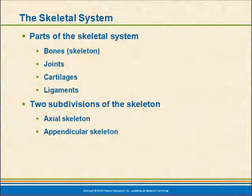That's actually part of the appendicular skeleton. The appendicular skeleton is associated with movement. That includes the arms, the girdles that hold the arms in place like the clavicle and scapula, and the bones of the pelvis — the hip bones.